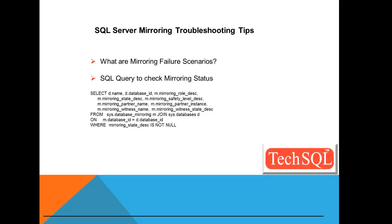You can also select the mirroring state, mirroring safety level, partner name, partner instance, witness name, and witness state description — all of which you can select from the DMVs. So let's go to the troubleshooting scenarios.